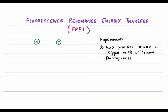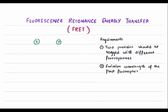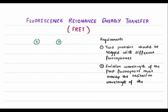The second requirement is that the emission wavelength of the first fluorophore must overlap with — or must be the same as — the excitation wavelength of the second fluorophore.